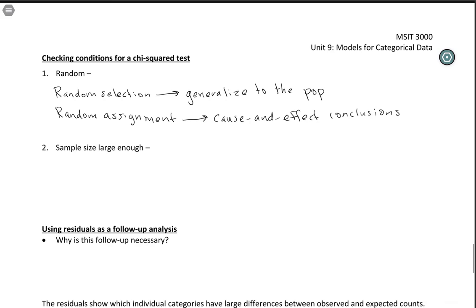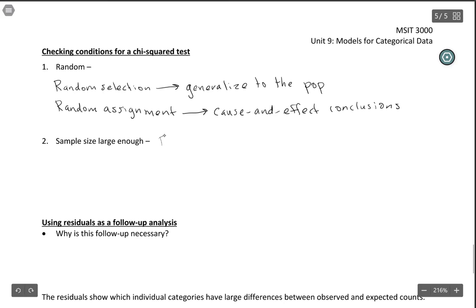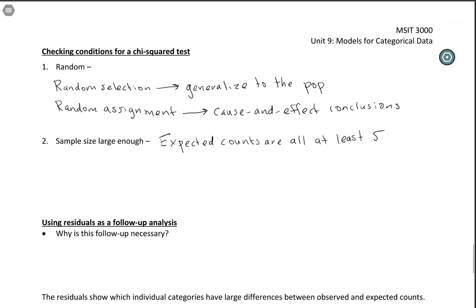Another familiar condition is sample size. The way of checking it looks a little different, but it's the same idea as before. We check sample size by using the expected counts. The rule is that all expected counts must be at least five before you use a chi-squared test, and this is given on the reference sheet.